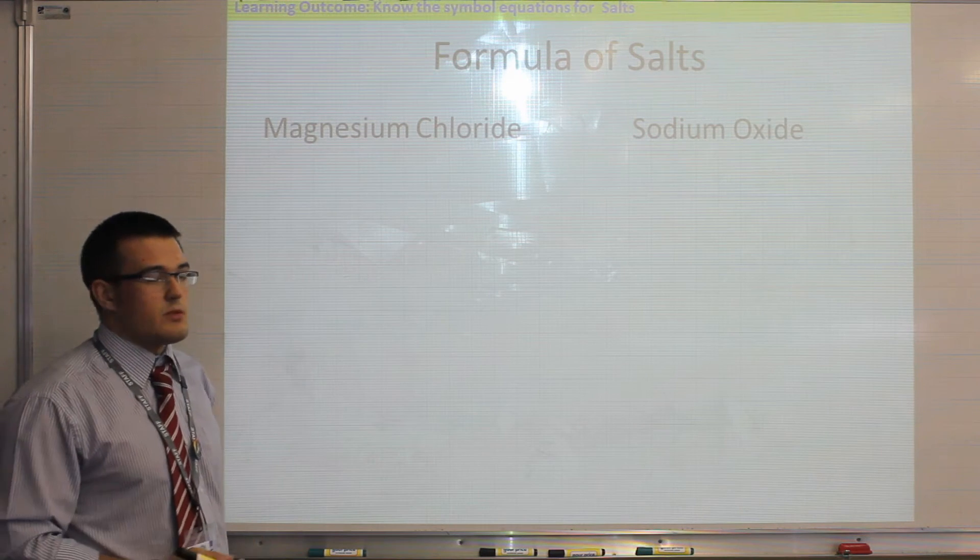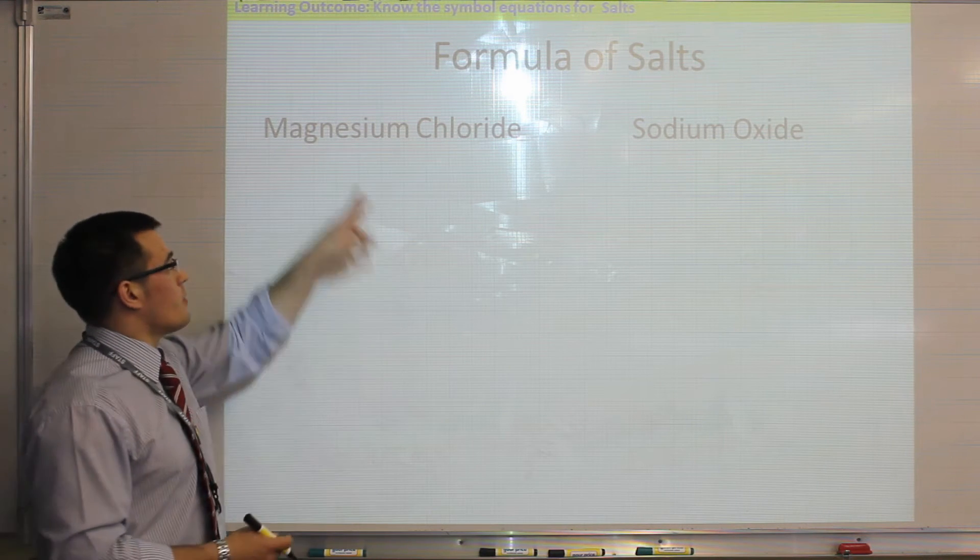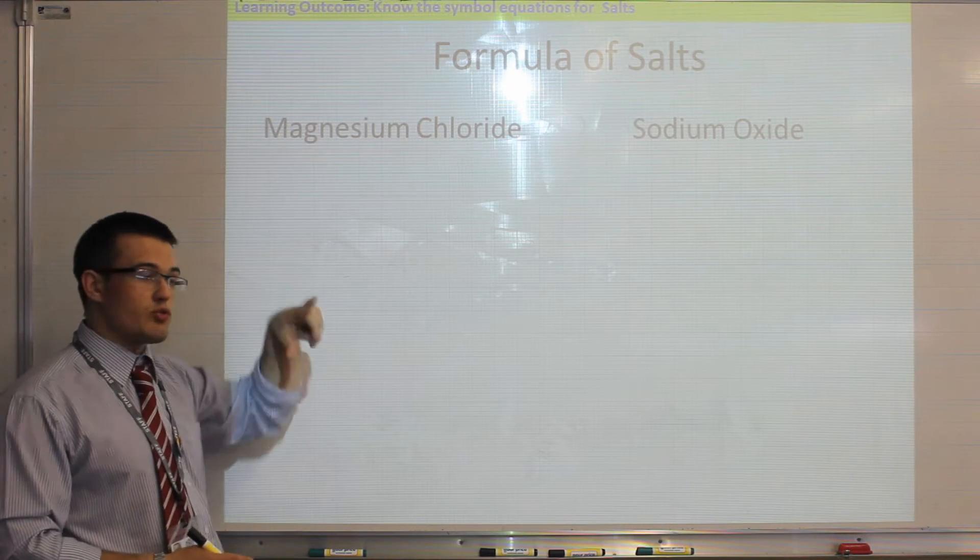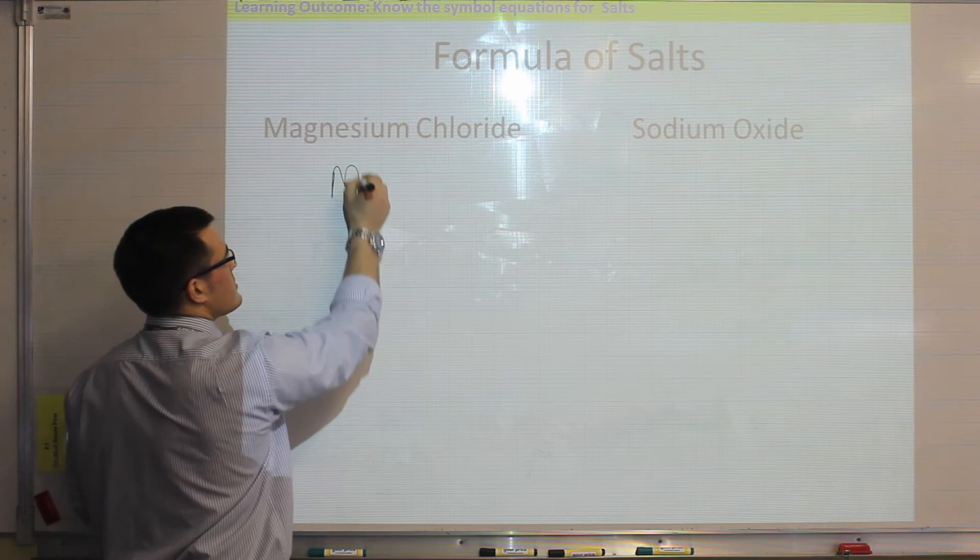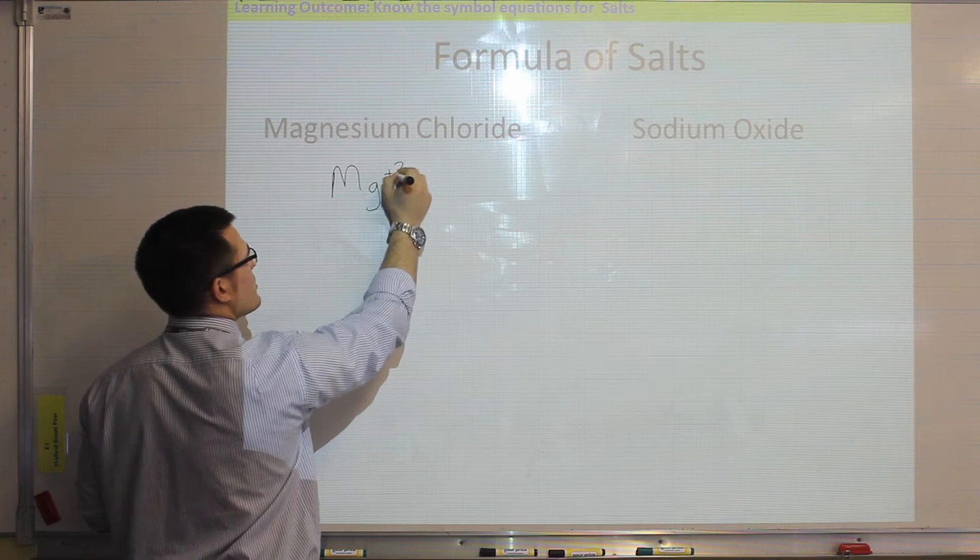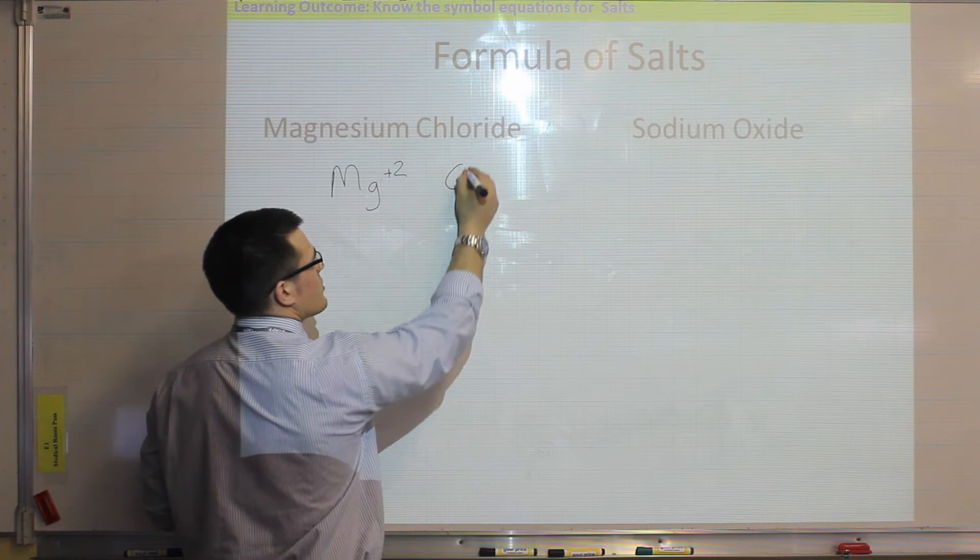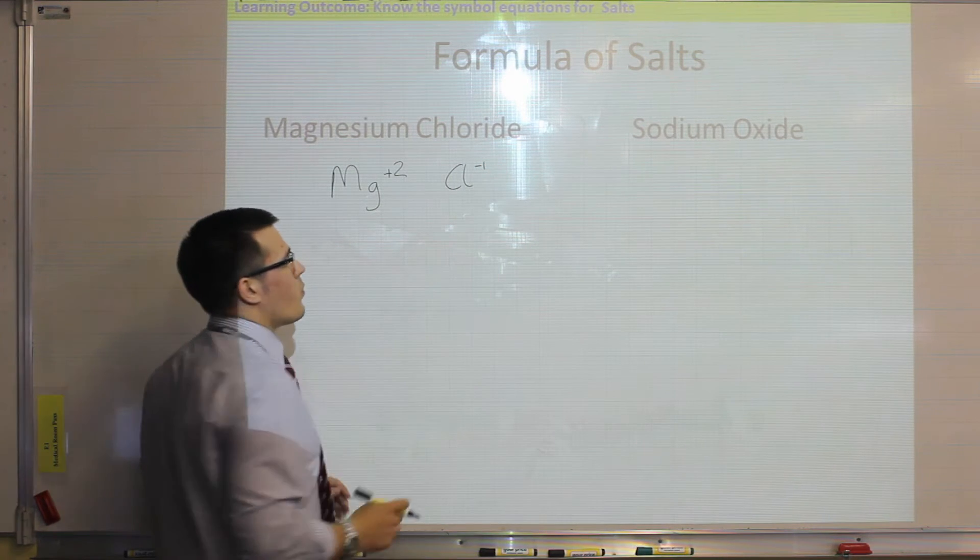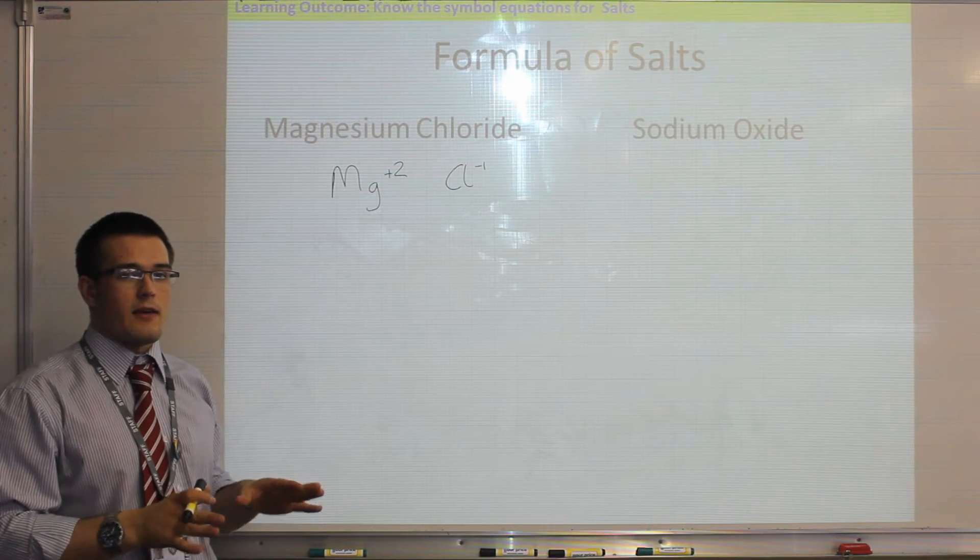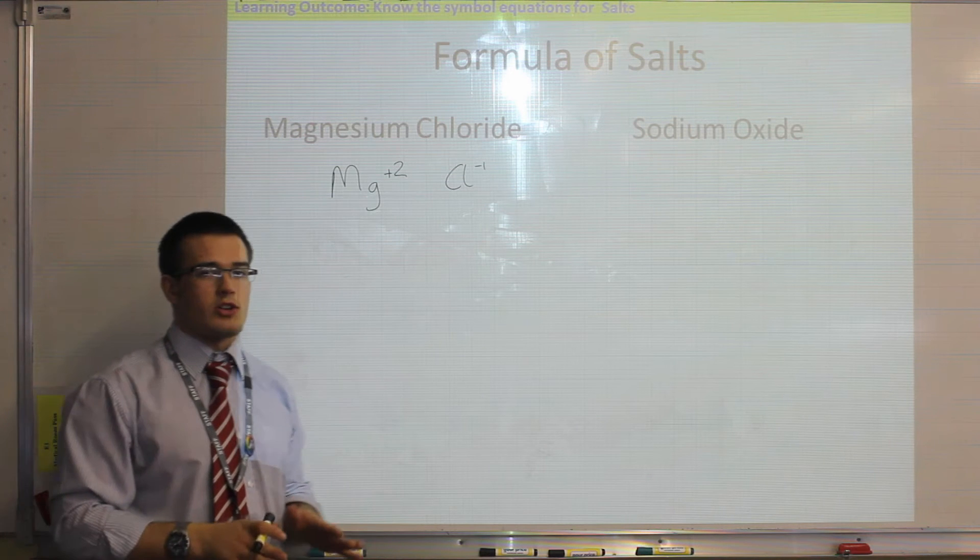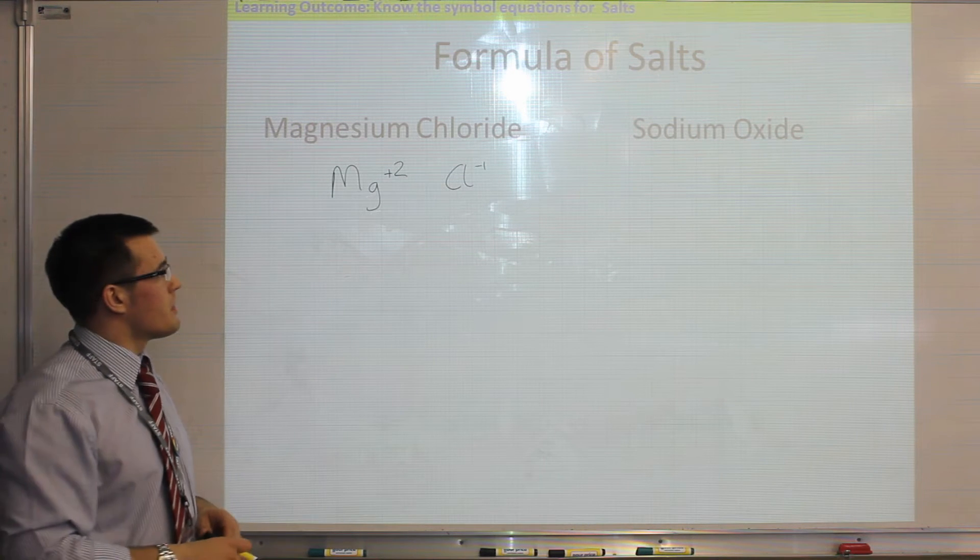We look on the periodic table for magnesium, we see that that is in group 2, so that forms magnesium 2+ ions. Then we look on the periodic table again for chlorine, and we see that chlorine forms minus 1 ions. Now, any ionic salt, the charges have to balance out.